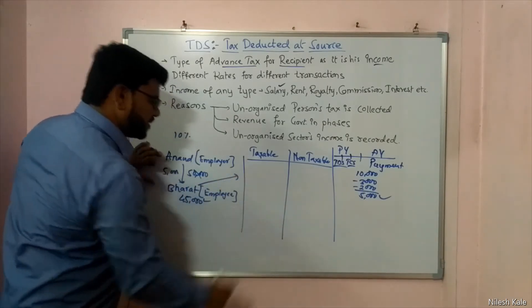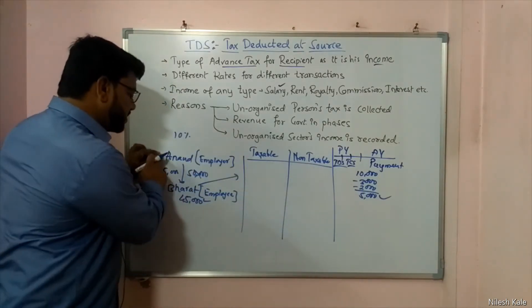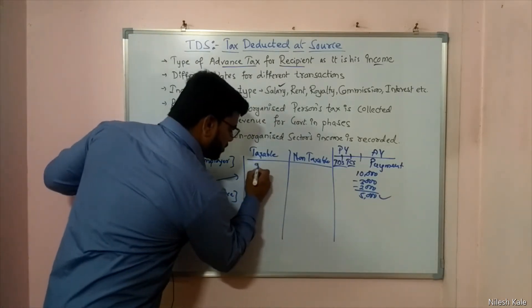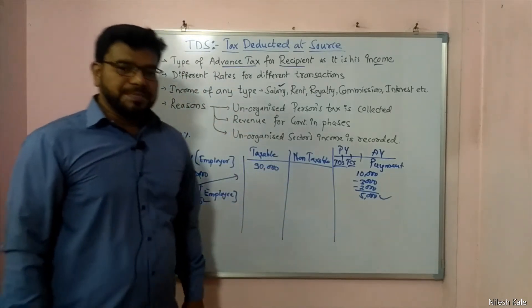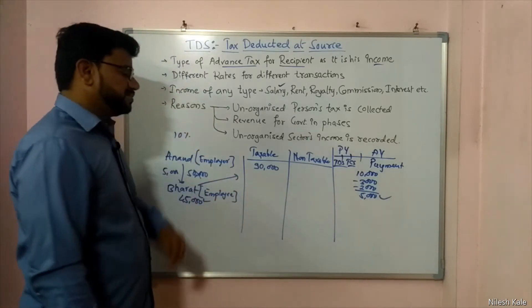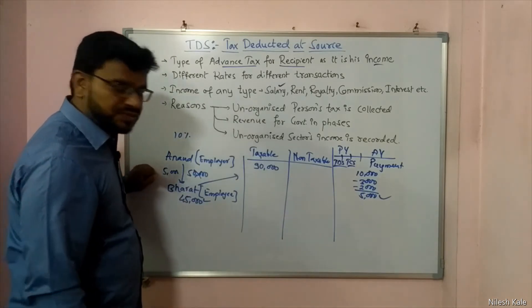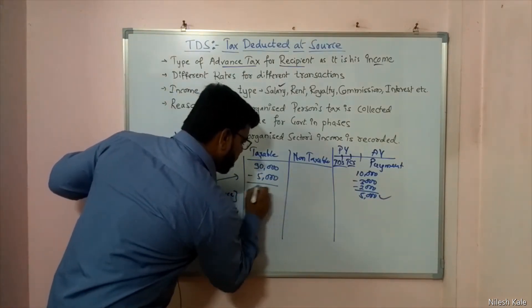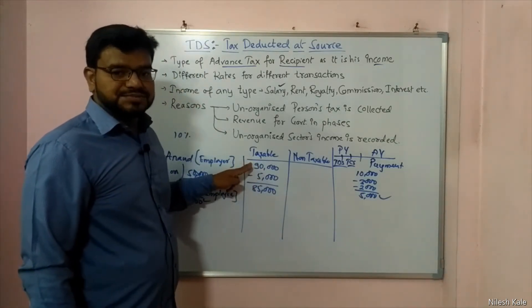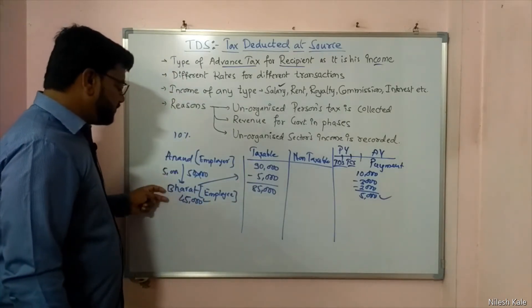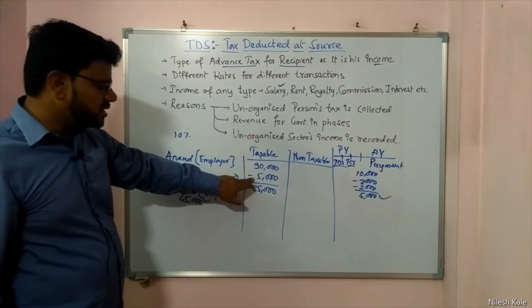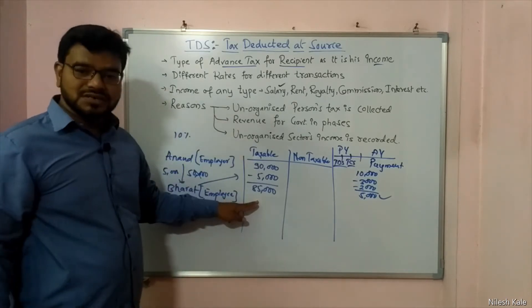Now for the recipient — Bharat, not Anand. If I start speaking for Anand, that becomes the TCS concept. This is TDS. Let us assume Bharat is a taxable person with 90,000 tax liability. Bharat says: I have already paid 5,000 earlier. So if 5,000 was paid earlier, then he only needs to pay 85,000 to the government, not 90,000. Government says: if you have to pay 90,000 but you've already paid 5,000, then just pay 85,000. You are a good person because you are filing your returns, Bharat.